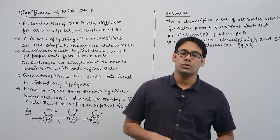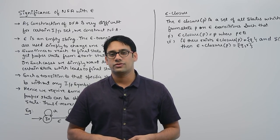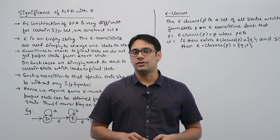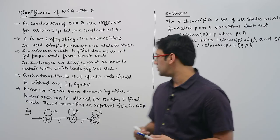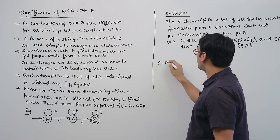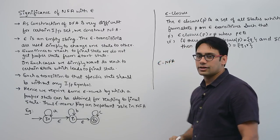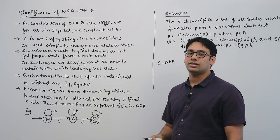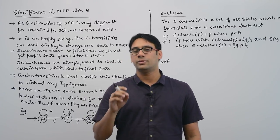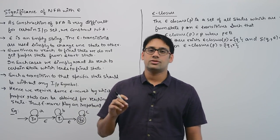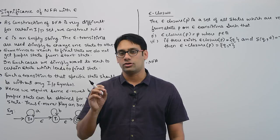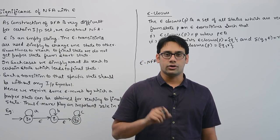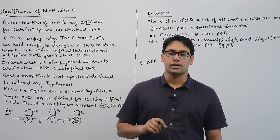So till now we have seen what is a DFA and what is an NFA. Now let us look at what is an epsilon-NFA. An epsilon-NFA is an NFA which takes a move even by seeing an epsilon symbol. When I say epsilon symbol, that means it is a symbol which does not have any length — a symbol of length zero, or you can say it is an empty string.